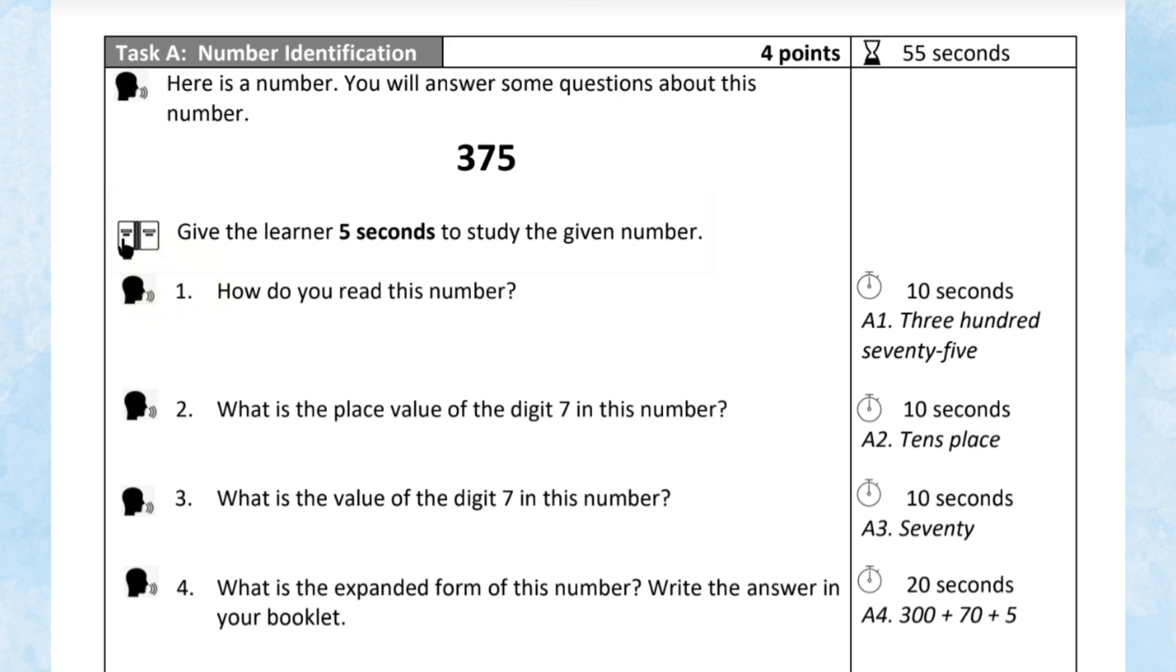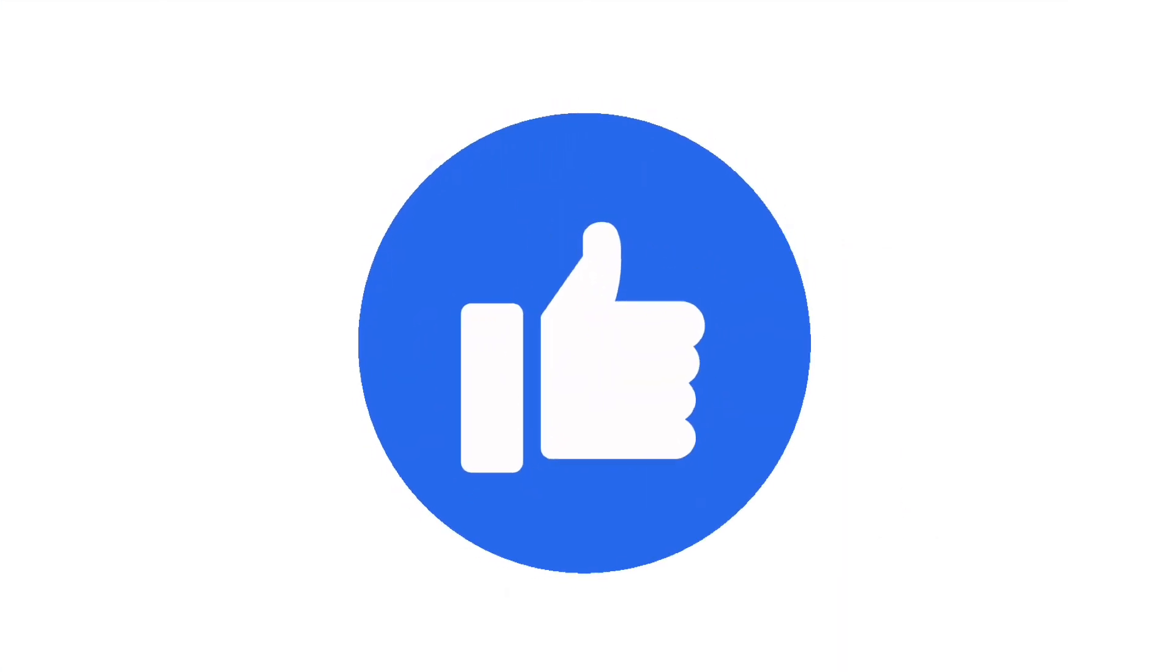Next, we will read the questions to the learner and give them enough time to answer, considering the allotted time for each question. For the first to third question, 10 seconds, and for the fourth one, 20 seconds, because they will write the answer in the booklet. As simple as that.